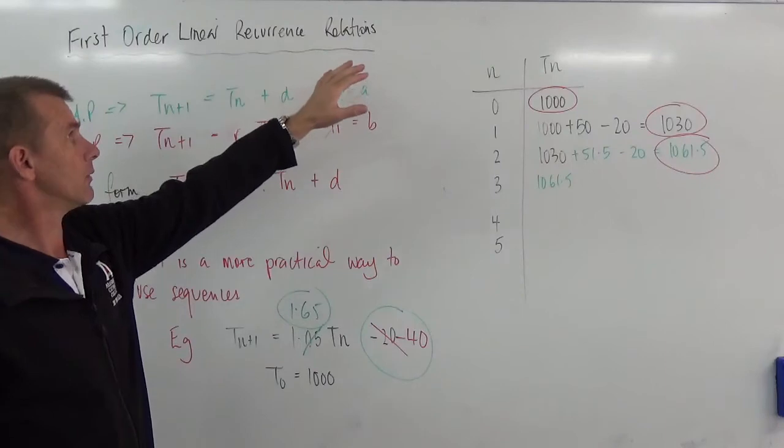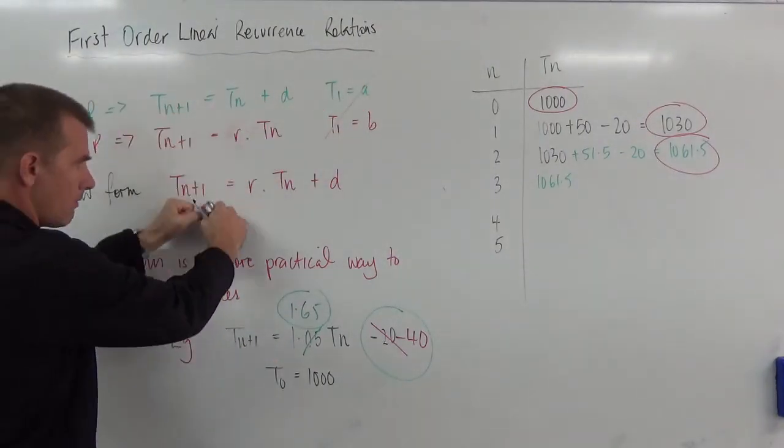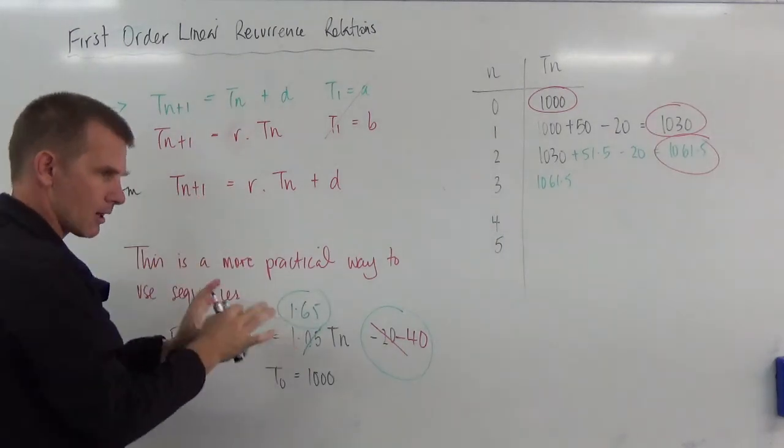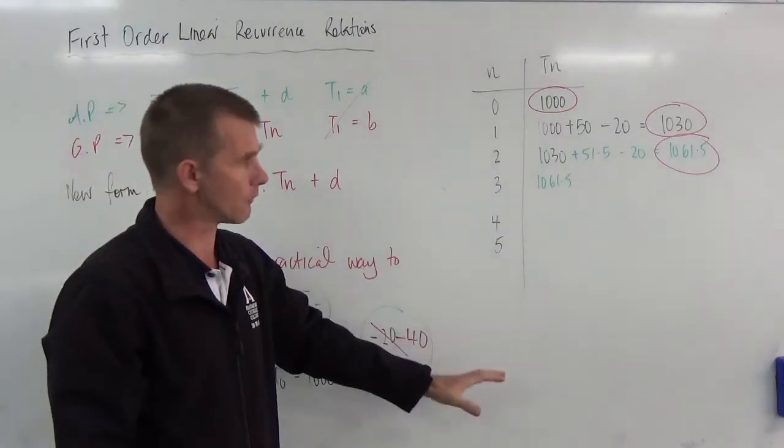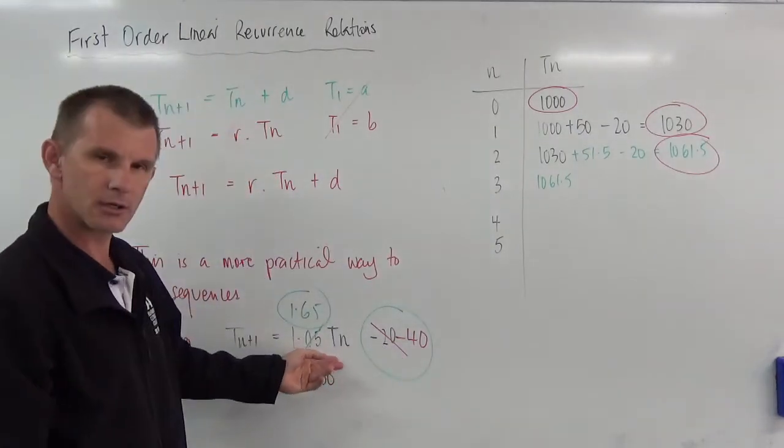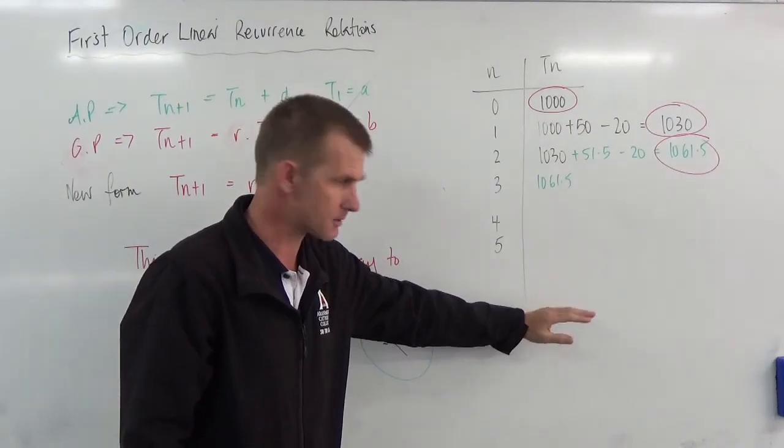So this first order linear recurrence relation is really combining AP and GP into one and then recognising how can we use that in a practical example. Hopefully this has given you the idea of what we're doing here. Run a situation like this through and play the numbers four or five or six years in advance and see what's happening.